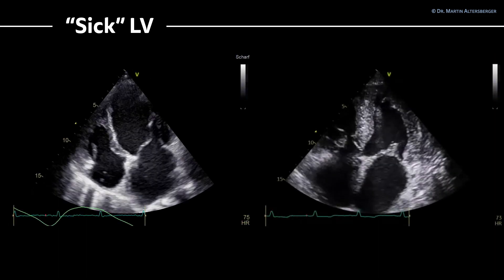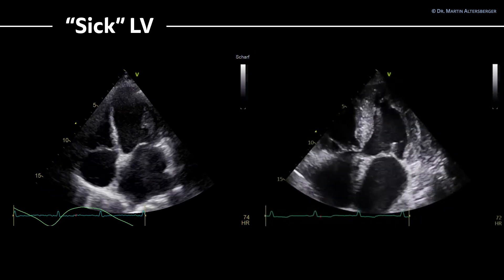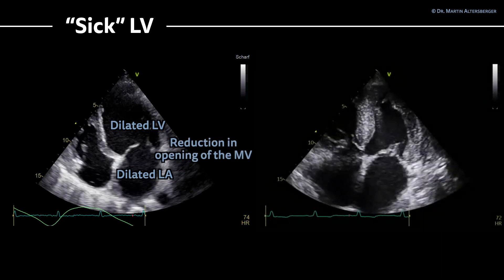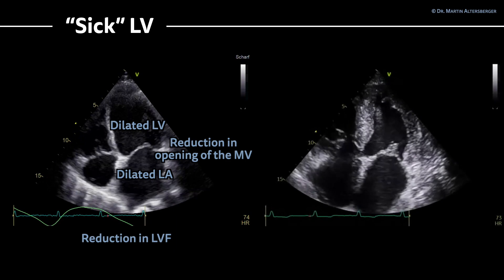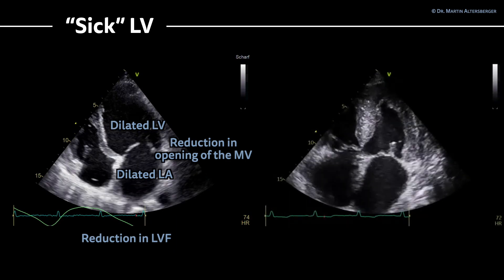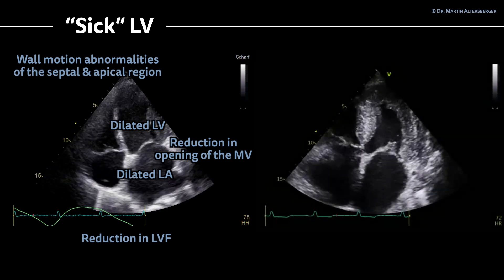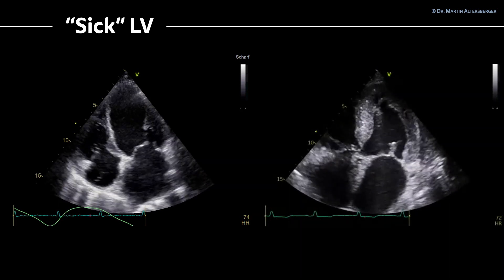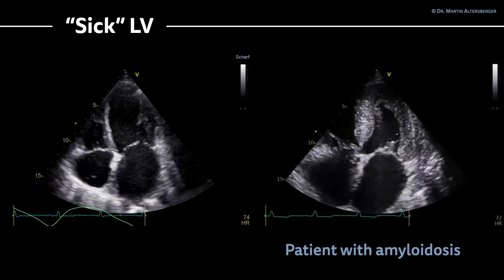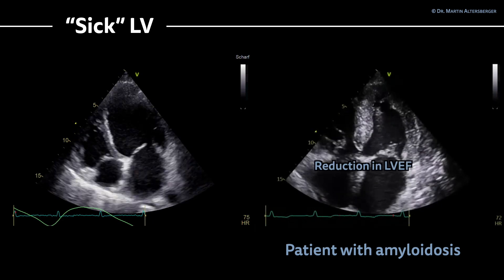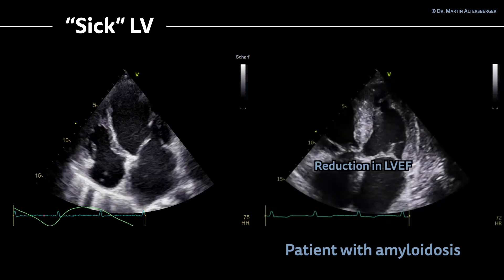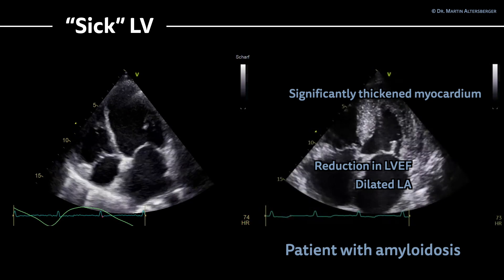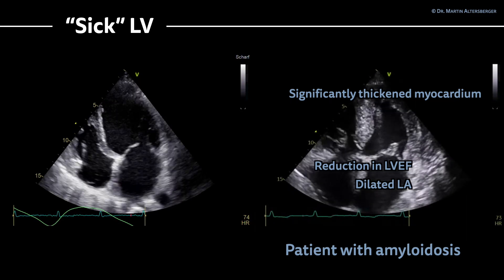More examples of sick left ventricles: here you have a dilated left ventricle, a dilated left atrium, a reduction in opening of the mitral valve, and definitely a reduction in left ventricular function. You see wall motion abnormalities of the septal and apical regions. On the right-hand side, you have another example of a definitely sick left ventricle — this is a patient with amyloidosis, amyloid heart disease. You see a reduction in left ventricular ejection fraction, and the myocardium is significantly thickened. The left atrium is also dilated.